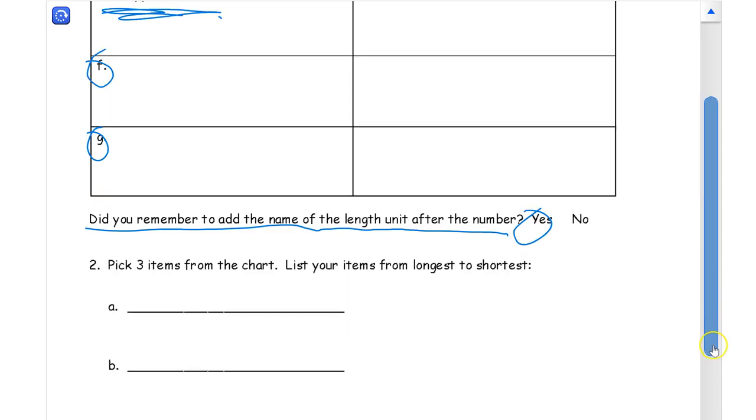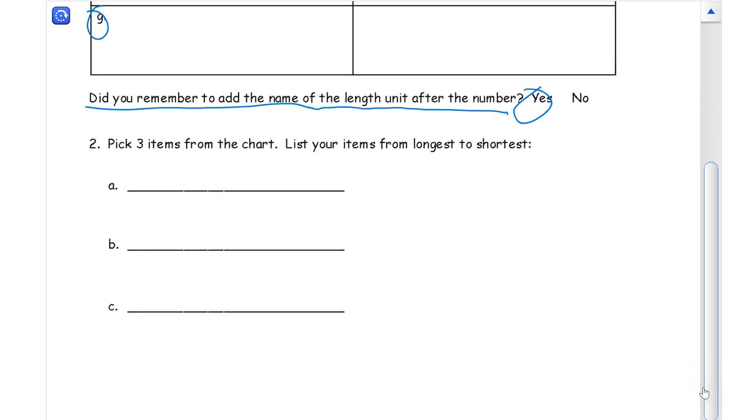And then here you choose three items from your chart and look at the measurements. List longest one here, longest one here, shortest one last. And whatever item is in the middle between those two, that one goes there for B. And that's it.